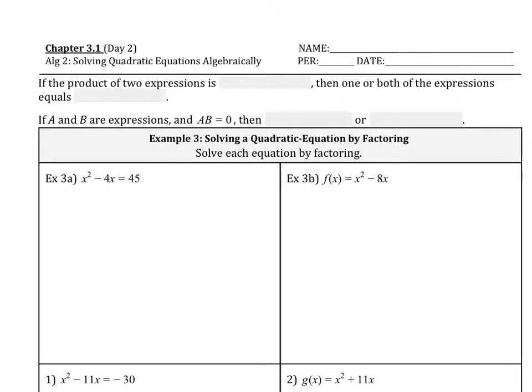Chapter 3.1, day 2, we're solving quadratic equations by factoring. If the product of two expressions is factorable, then one or both of the expressions equals zero. If A and B are expressions and A times B equals zero, then A equals zero or B equals zero, it could be both.